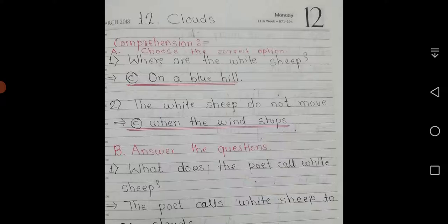Second, the white sheep do not move. Correct option is C, when the wind stops.